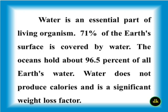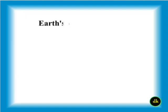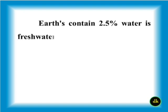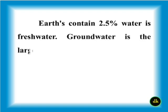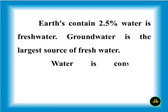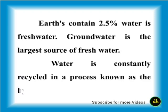Earth contains 2.5 percent fresh water. Groundwater is the last source of fresh water. Water is constantly recycled in a process known as the hydrologic cycle.